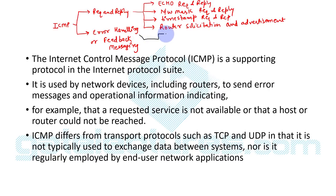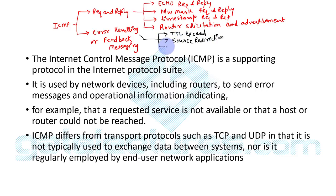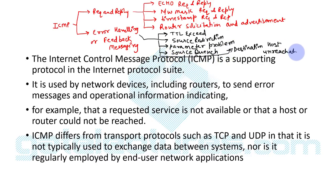For error handling purposes there are five uses: number one is TTL exceed (time-to-live exceed); number two is source redirection; number three is parameter problem; number four is source quench; and number five is destination host unreachable. For all these purposes we use the ICMP protocol.